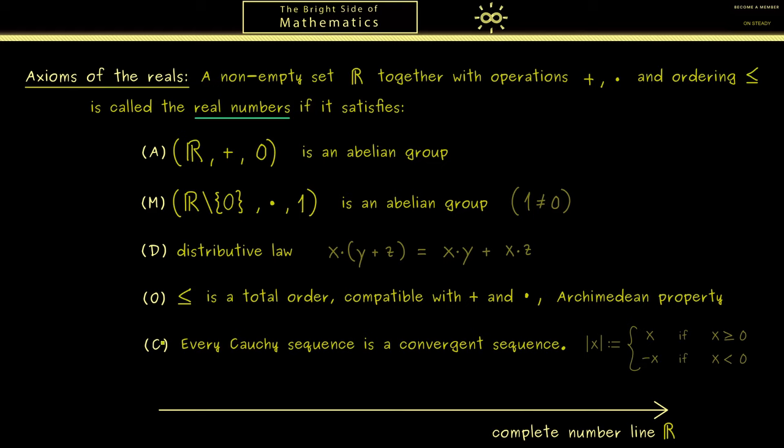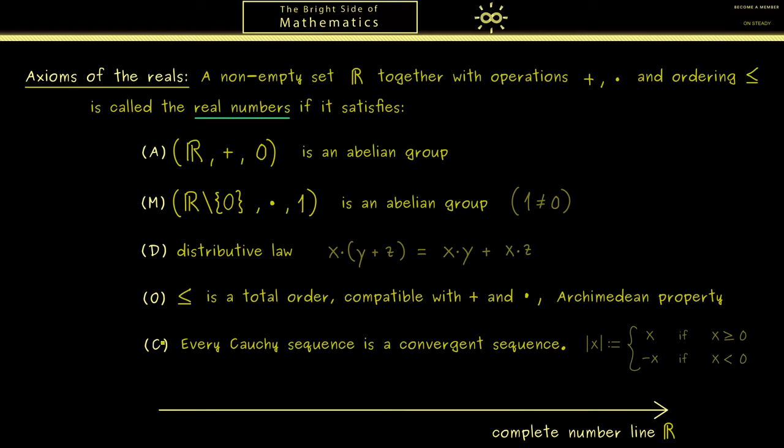And the last property here is the completeness axiom which talks about sequences. But don't worry we will talk about sequences a lot soon. Therefore you will understand this axiom in the end.